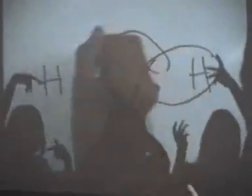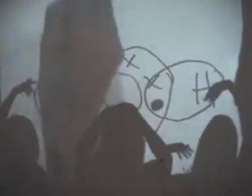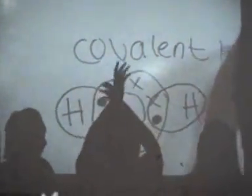First it's covalent bonding with only nonmetals. Then ionic bonding — that includes all the elements.